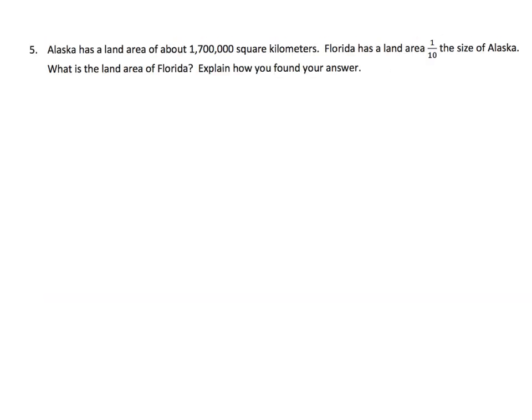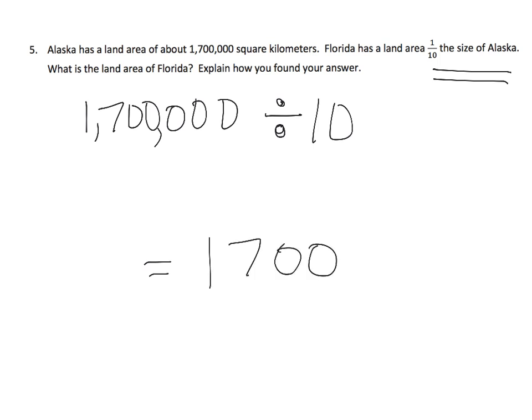Last example. Alaska has a land area of 1,700,000 square kilometers. Florida has a land area one-tenth of that. So that means we're going to divide by 10. Well, we've now learned that if you're going to divide by 10, nice shortcut for doing that in this case is to just chop off a zero. And so Florida is 170,000 square kilometers.